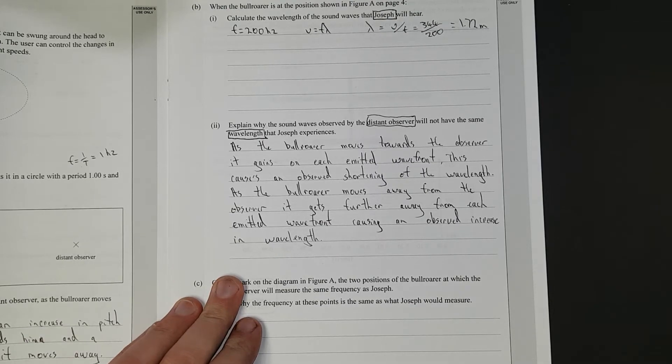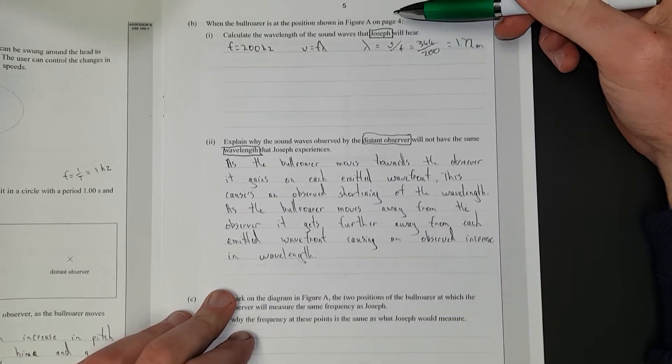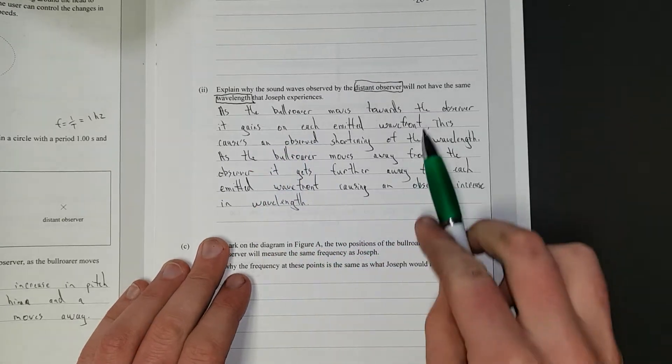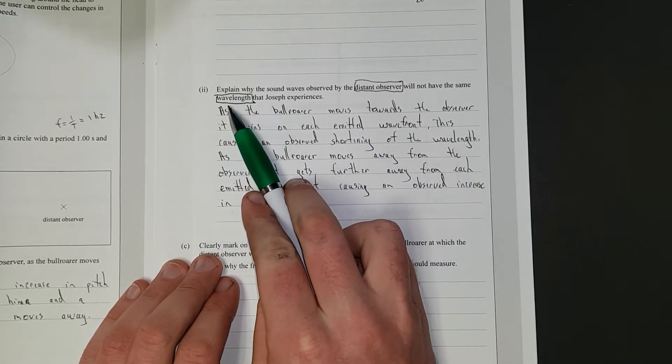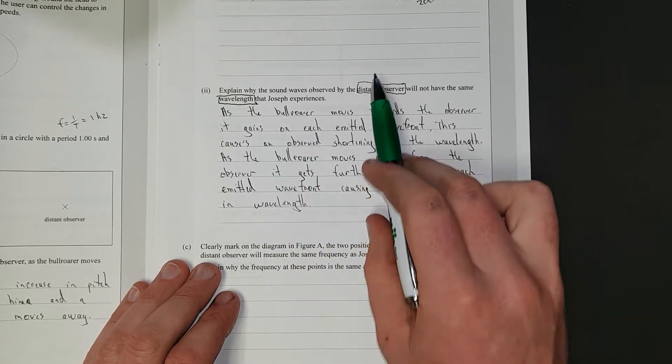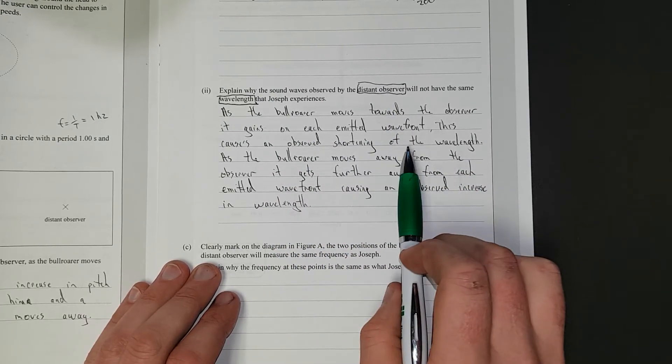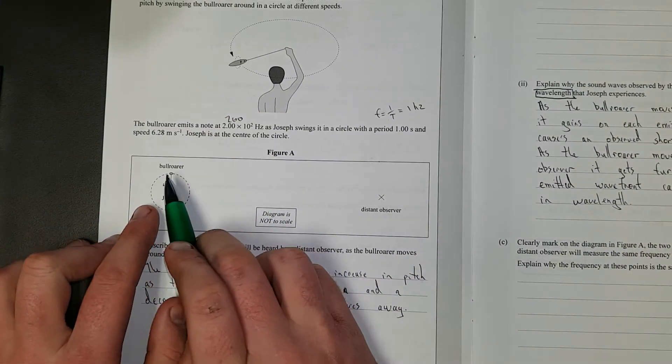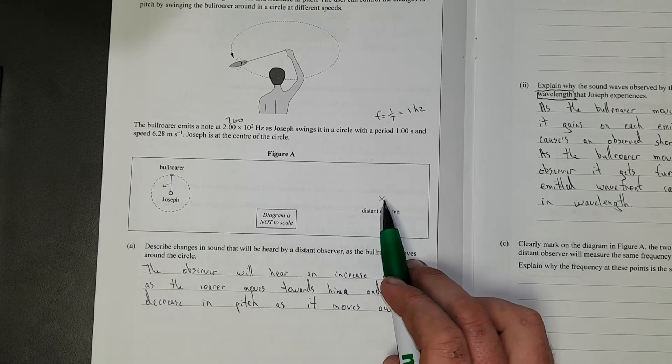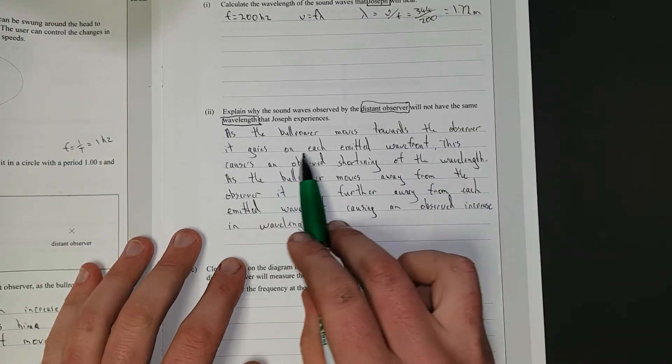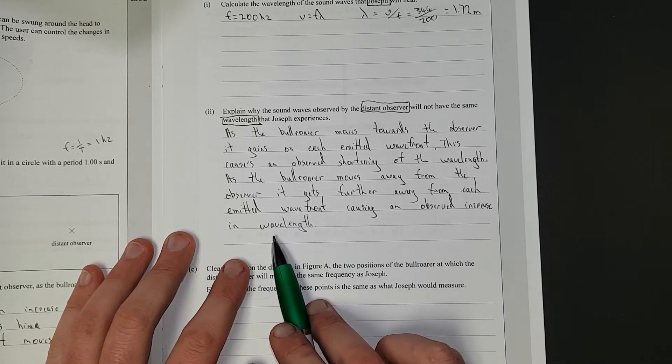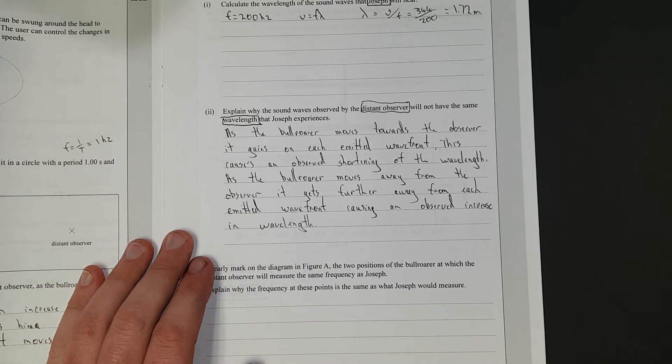This here did screw up so many people, like 70% of students didn't get this question. A lot of kids talked about frequency when they answered this question, but it's asking about wavelength. So if you can't answer the question that is asked, you don't get the point. This answers both sides of the coin. If you just did the first half, really, you look at the picture, the bullroarer is moving away. So initially the observer is going to hear a lengthening of the wavelength. And you need to say how it happens. You need to say it gains on each emitted wave front, or it moves away from each emitted wave front, causing an observed increase in wavelength.